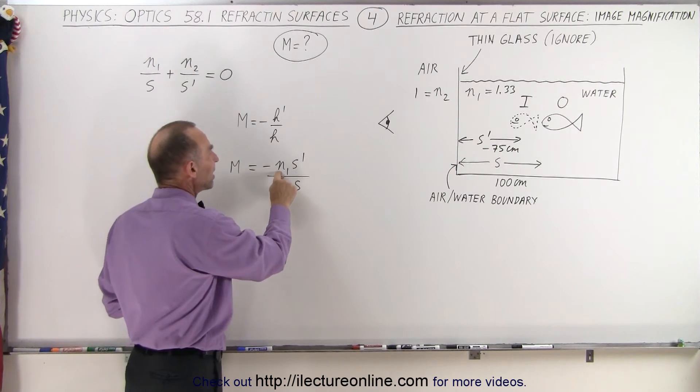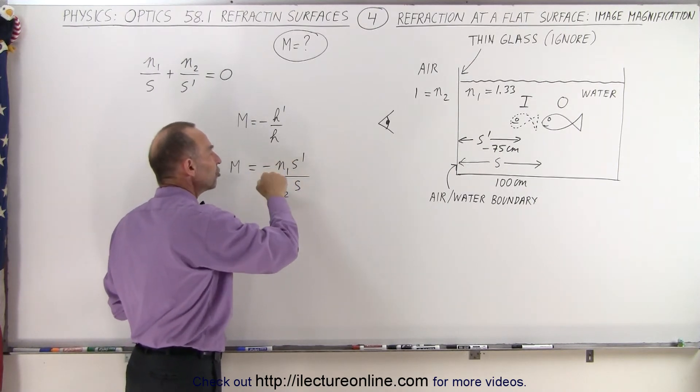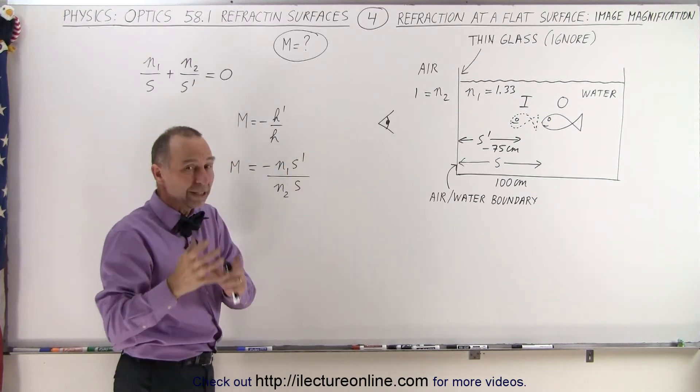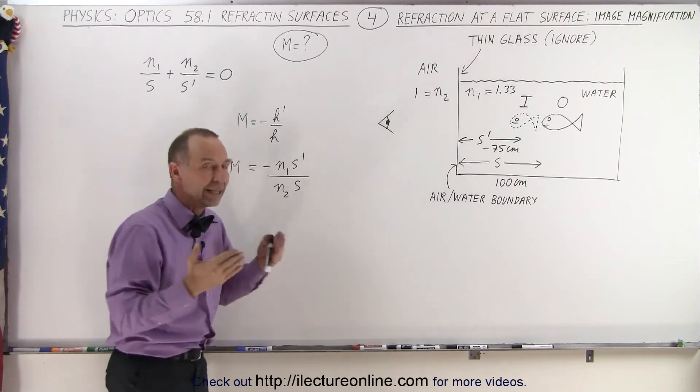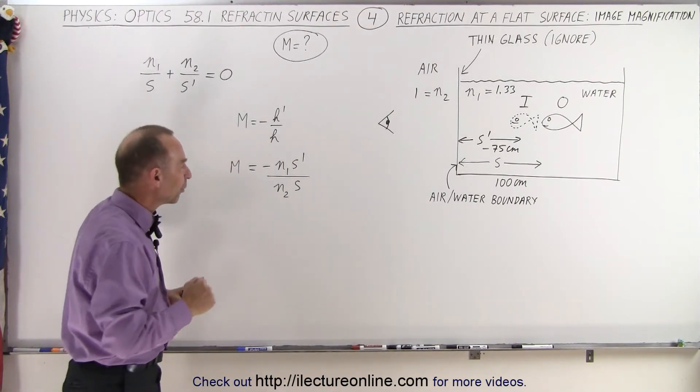But the reason why that's so is that these kind of cancel each other out. The index of refraction change and the distance to the image, which would be different than the distance of the object, both will affect the magnification. But in this case, they seem to be working in opposite directions.